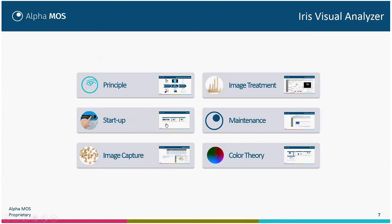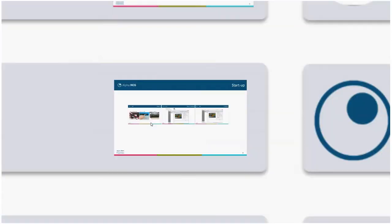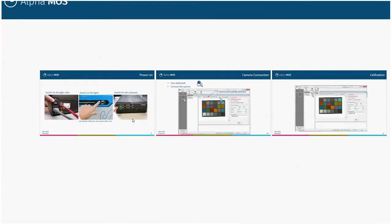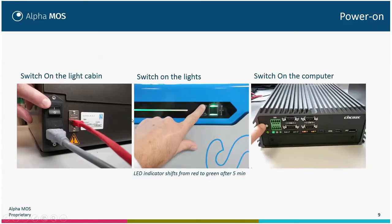After seeing the principle, we will see the startup procedure. The startup procedure is quite simple. To start the system, you first switch on the light cabin, and then you can switch on the two lights — the upper light with this button and the lower light with this second button. An LED will indicate if the light panel is on.